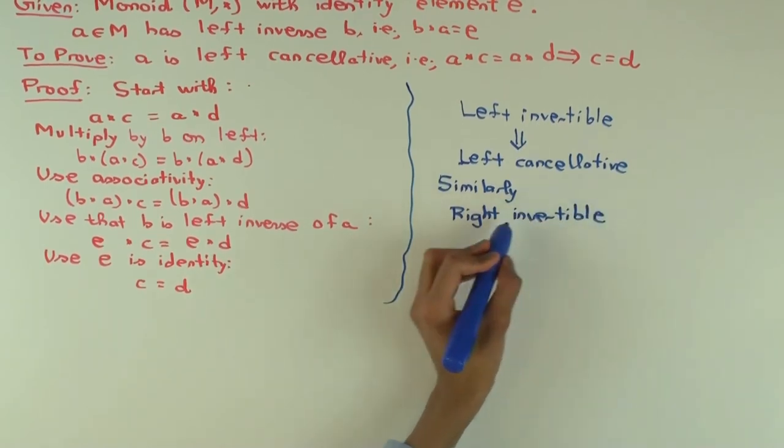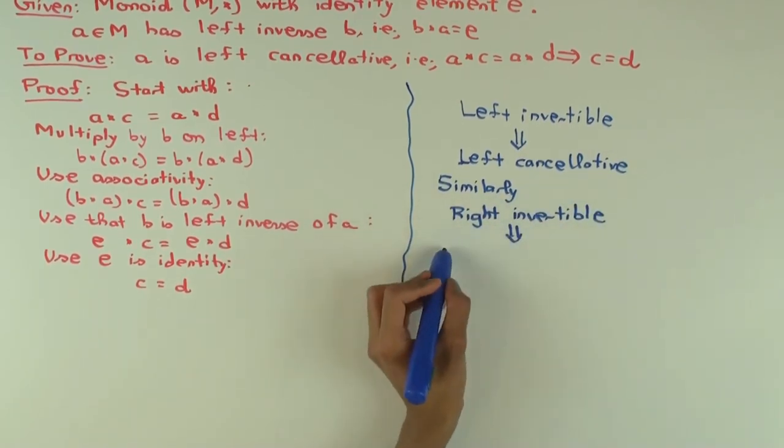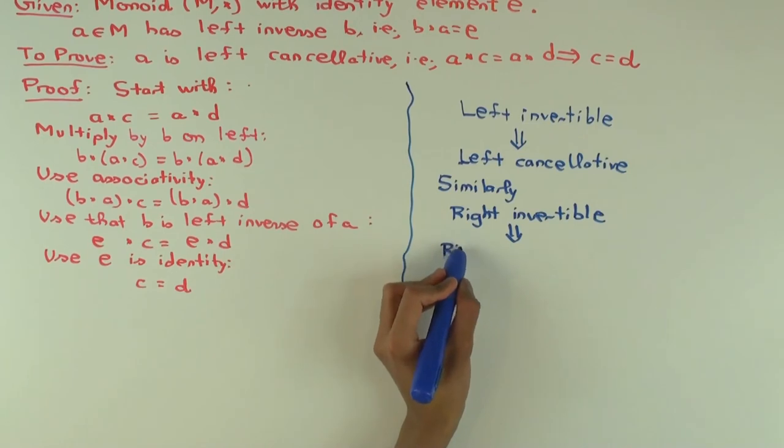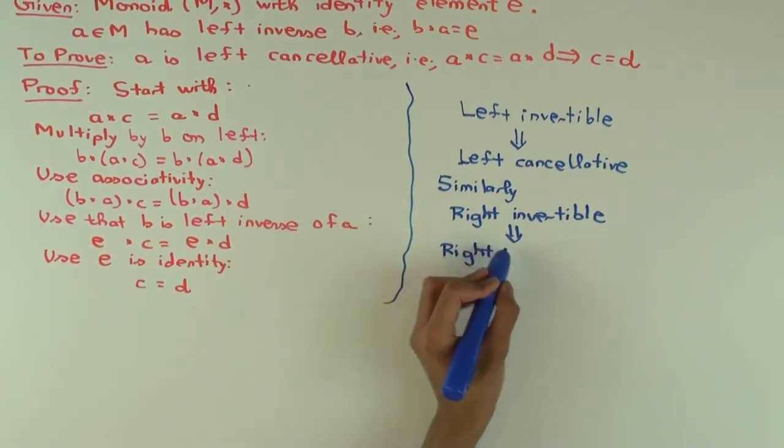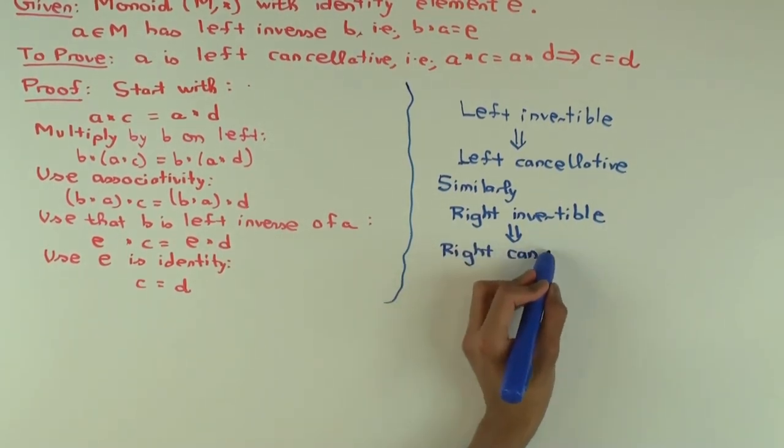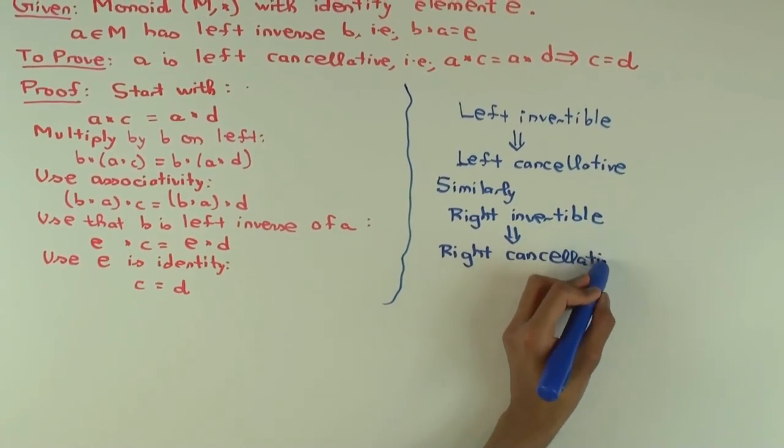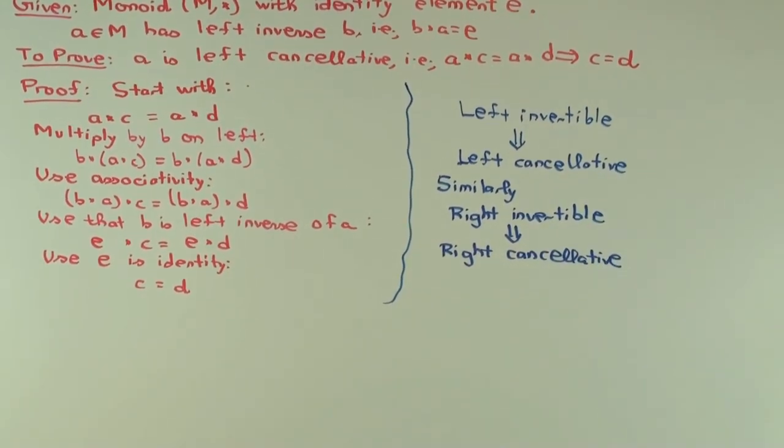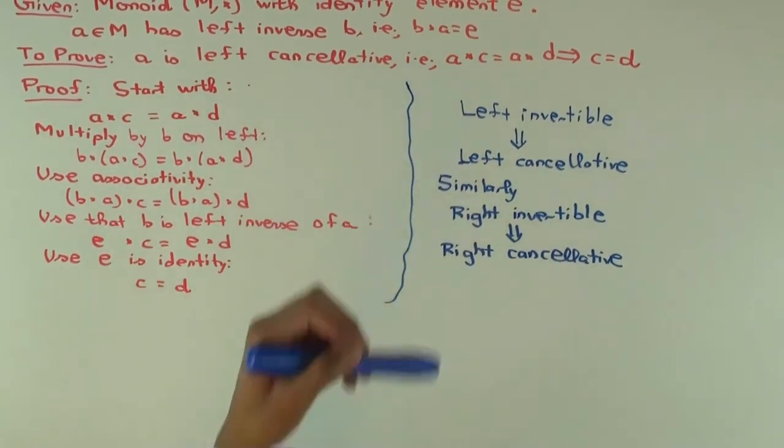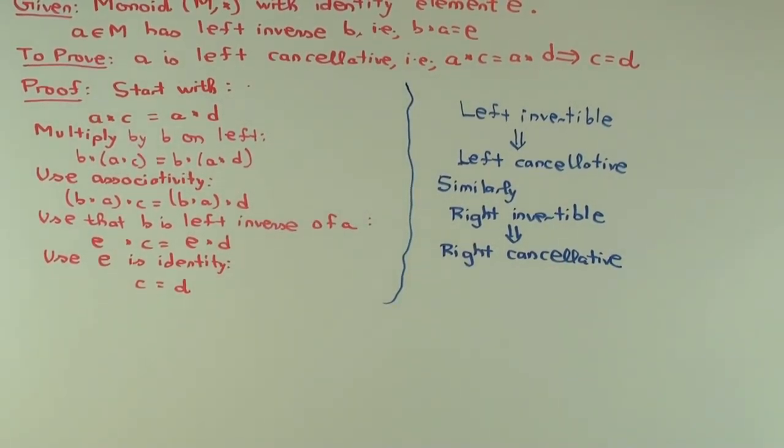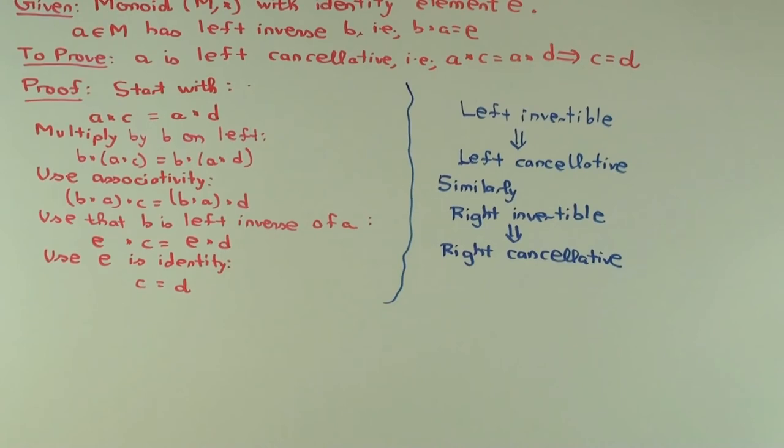Now you do know that if an element is both left invertible and right invertible, it actually has a two-sided inverse. Why is that? Because any left inverse must equal any right inverse, right? We saw that in a separate video. Because you use that technique, pit them against each other. So invertible is the same as saying left invertible and right invertible. Why? Because if it's left invertible and right invertible, then the left and right inverse must be equal, and hence it's actually invertible in a two-sided sense.